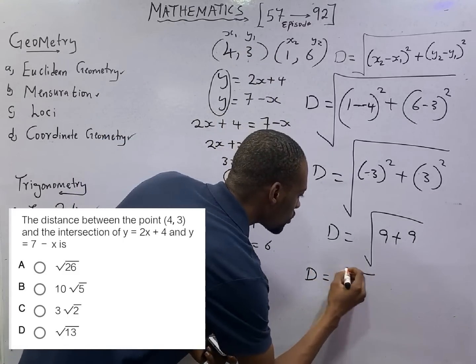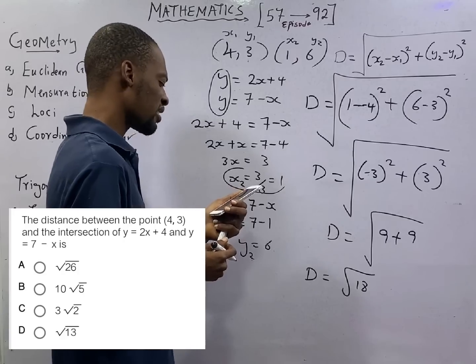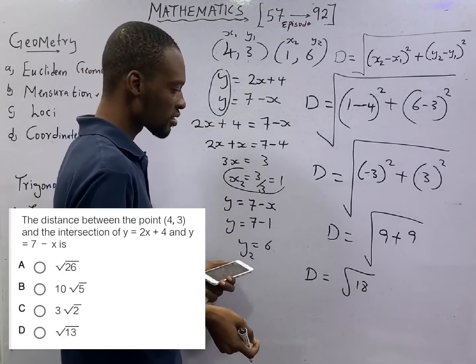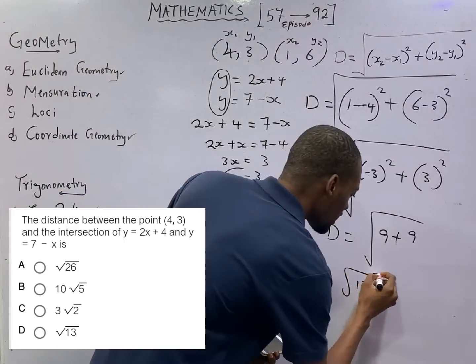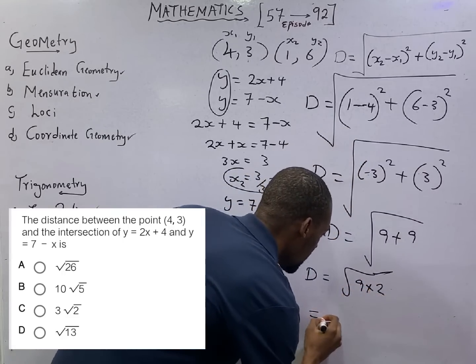D becomes the square root of 18. And what is 18? 18 is 9 times 2. This is the square root of 9 times 2. That is, the square root of 9 is 3.